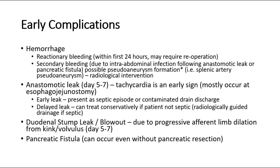Another early complication is anastomotic leak, occurring on post-op day 5 to 7. Tachycardia is an early sign, mostly occurring at the esophagojejunostomy. Early leak presents as a septic episode or contaminated drain discharge. Delayed leak can be treated conservatively if the patient is not septic. Duodenal stump leak or blowout is due to progressive afferent limb dilation from kink or volvulus. Pancreatic fistula can occur even without pancreatic resection.